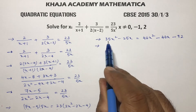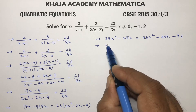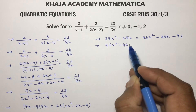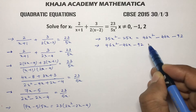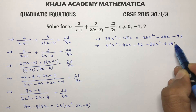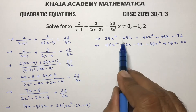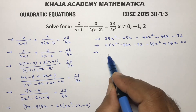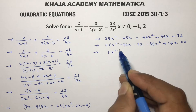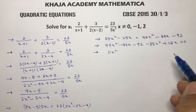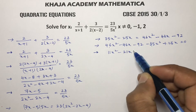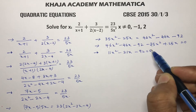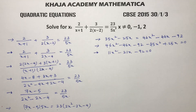Since 46 is greater than 35, transpose these two values to the right side: 46x squared minus 46x minus 92 minus 35x squared plus 25x. If you transpose, plus 35 becomes minus 35, and minus 25 becomes plus 25x. So 46 minus 35 is 11x squared, and minus 46 plus 25 is minus 21x, minus 92 equals 0.